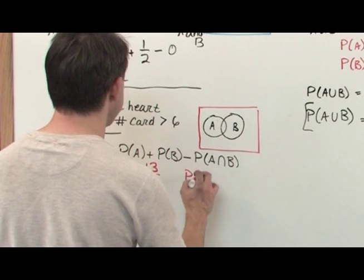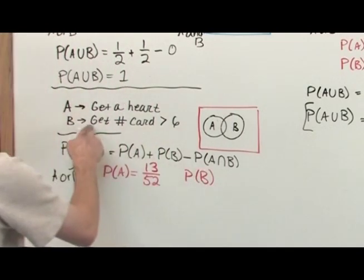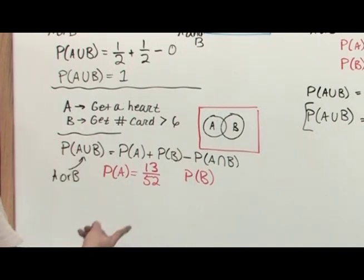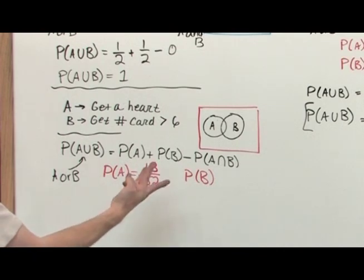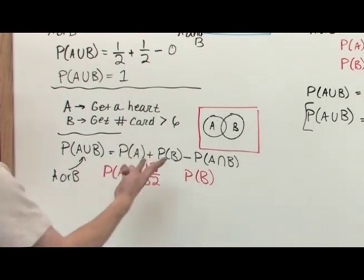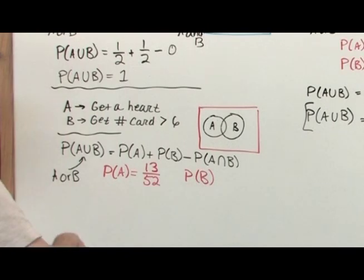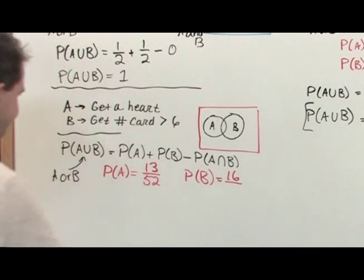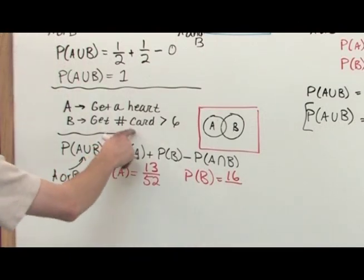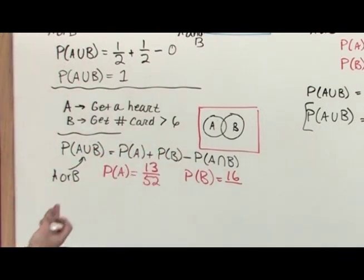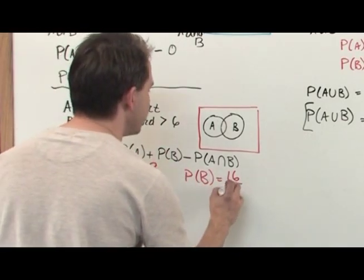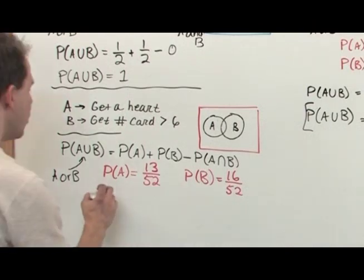What is the probability of event B happening? Event B is getting a number card greater than 6, that means I can pull a 7, an 8, a 9, or 10. That's 4 cards. But there's all different suits, there's 4 suits, so there's 4 cards times 4 suits is 16 total cards for success. I have 4 cards—7, 8, 9, 10—but I have 4 different suits, so there's 16 total cards to make B a success, again out of 52 cards.